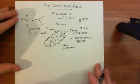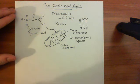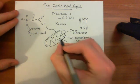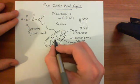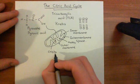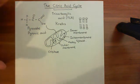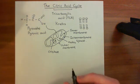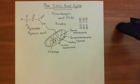Pyruvic acid molecules diffuse from the cytoplasm into the intermembrane space. However, the inner membrane of the mitochondria is extremely tight, and the pyruvic acid molecules need to get into the matrix of the mitochondria — the space within the inner membrane — where all of the enzymes for the citric acid cycle are located.